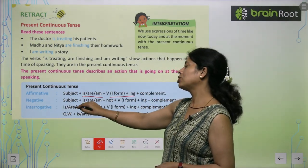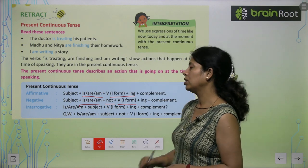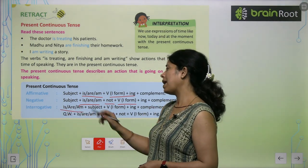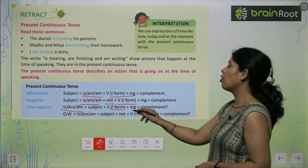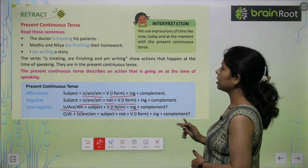If it's negative, the subject will come with is/am/are plus not plus first form of verb and -ing. If it's interrogative, then is/am/are will come first, then the first form of verb and -ing. Let's move on to the task and exercise.